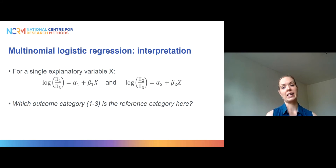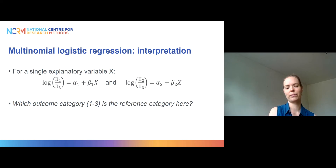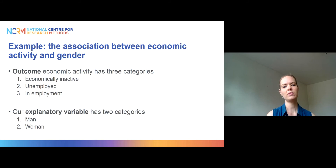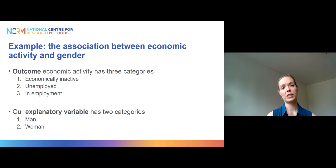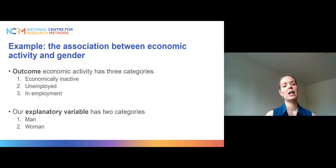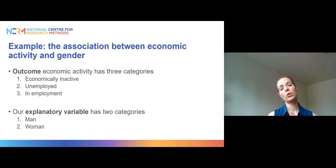Our example looks at the association between gender and economic activity. The outcome variable has three categories: whether someone is economically inactive — perhaps on parental leave or retired — whether they are unemployed and looking for work, or whether they are currently in employment. We're looking at how being a man or a woman is associated with the likelihood of being in each of these categories.